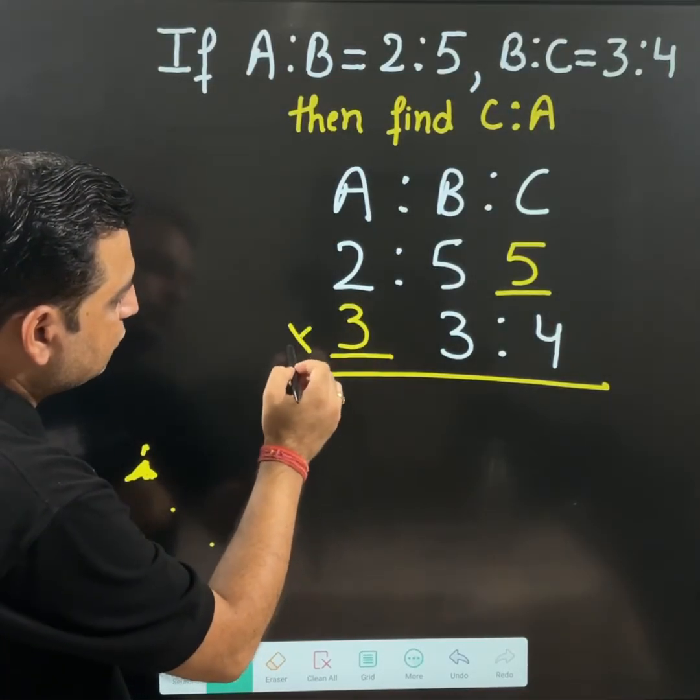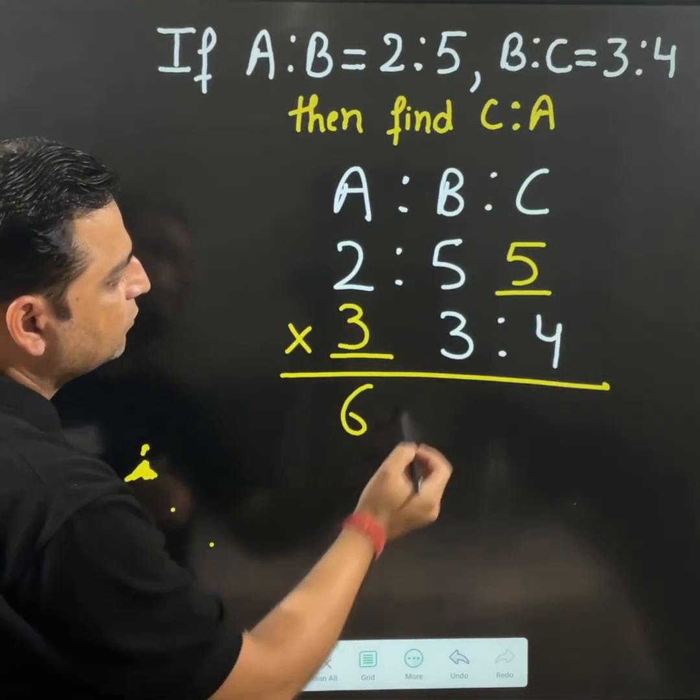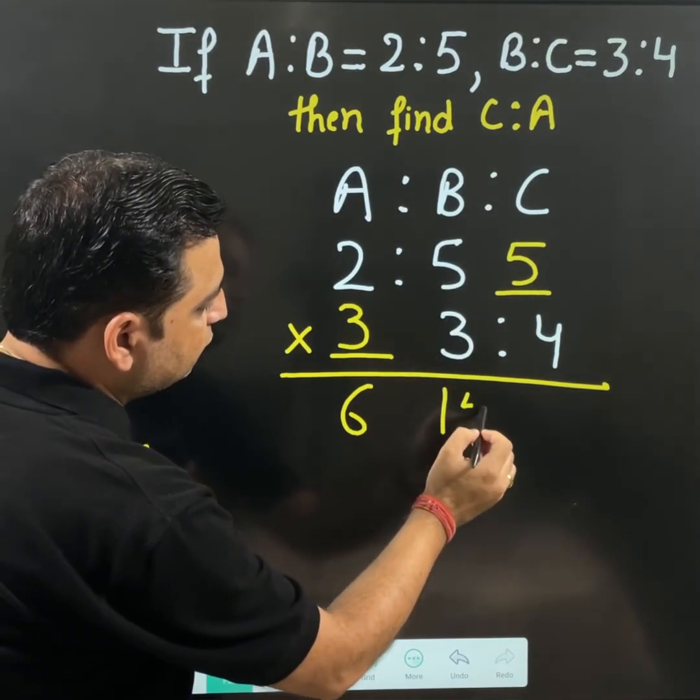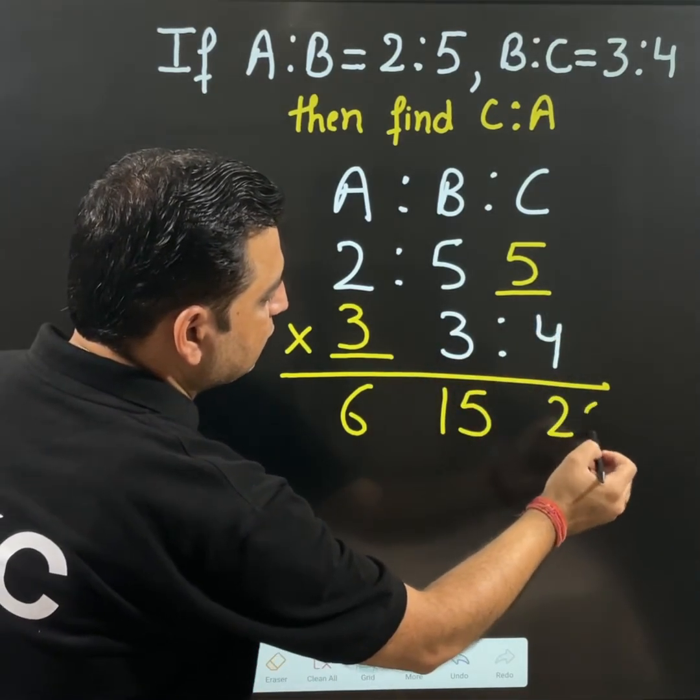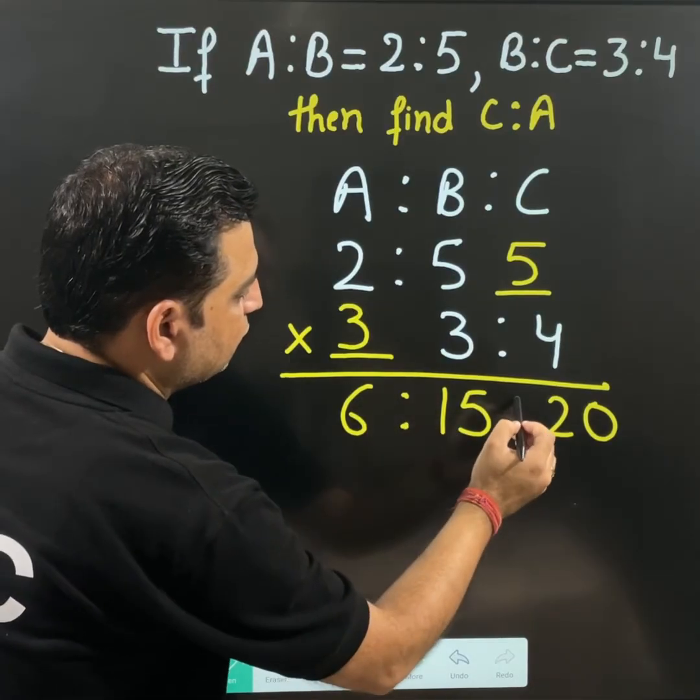2 multiply 3. 2 times 3 is 6. 5 times 3 is 15. 5 times 4 is 20. See this is what we are getting.